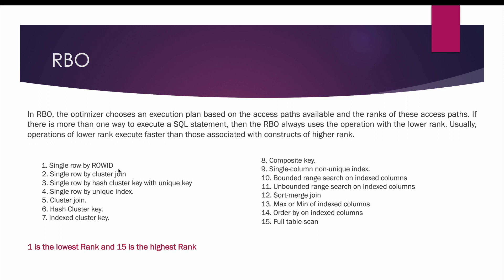There is also an associated downfall with RBO. Say there is a statement: SELECT * FROM employees WHERE gender = 'M'. In this case the query may qualify for around 50% of your table rows. If an index is used to access more than 15% of table rows, it takes longer than a full table scan. However, since single row by row id has a lower rank, RBO will still pick it, causing the query to run longer. Using a full table scan would have been much faster.